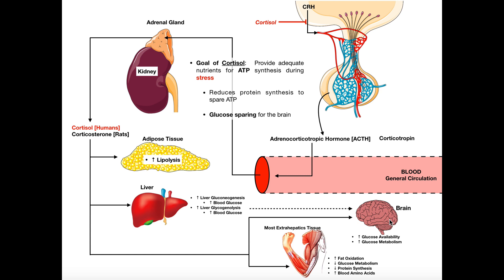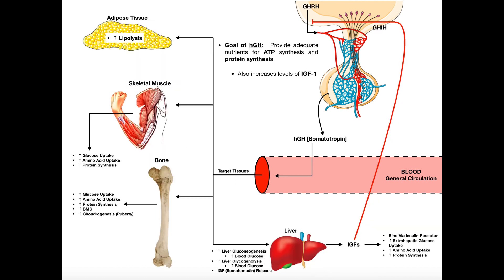The only other thing to mention about cortisol is that, just like the other hormones, it exerts negative feedback on the corticotropin-releasing hormone released from the hypothalamus. If cortisol becomes elevated, it feeds back and inhibits CRH release by the hypothalamus. That in turn decreases ACTH — adrenocorticotropic hormone — which then decreases the amount of cortisol released by the adrenal cortex. So negative feedback is at play here, just as we saw with growth hormone and thyroid hormones.